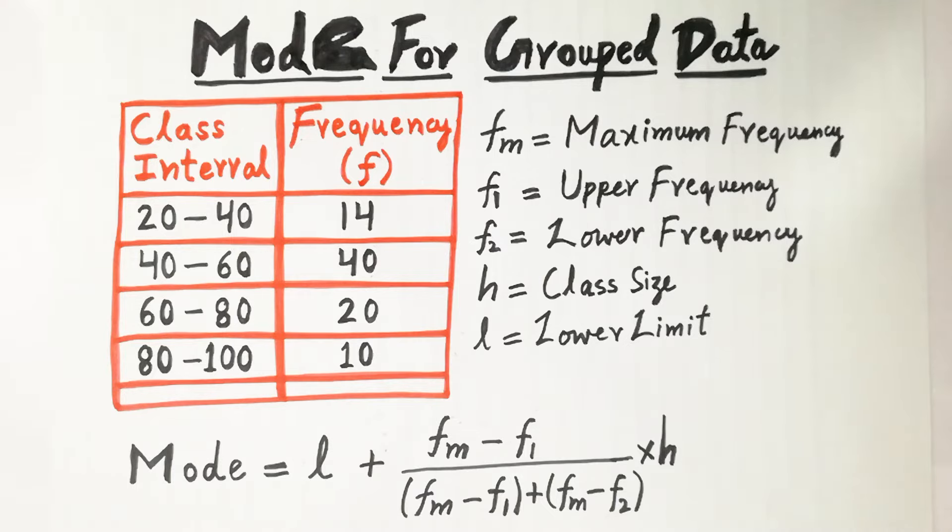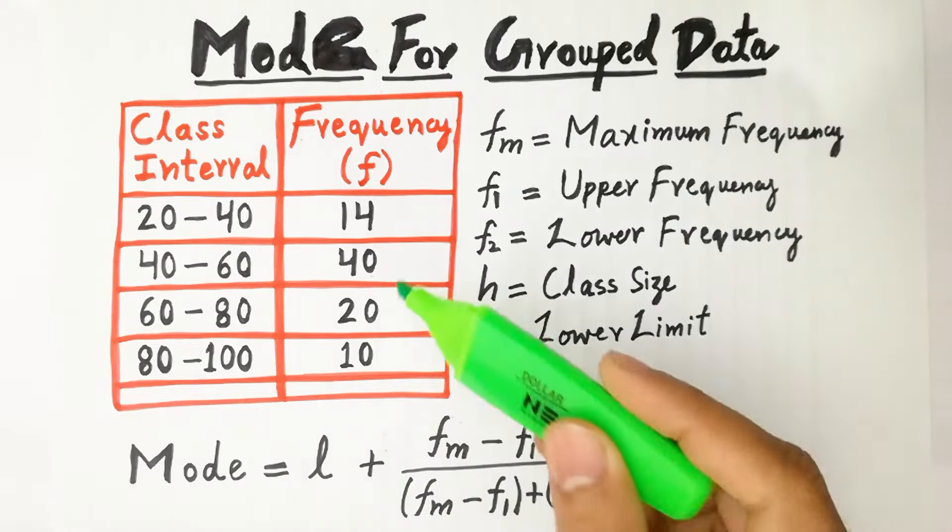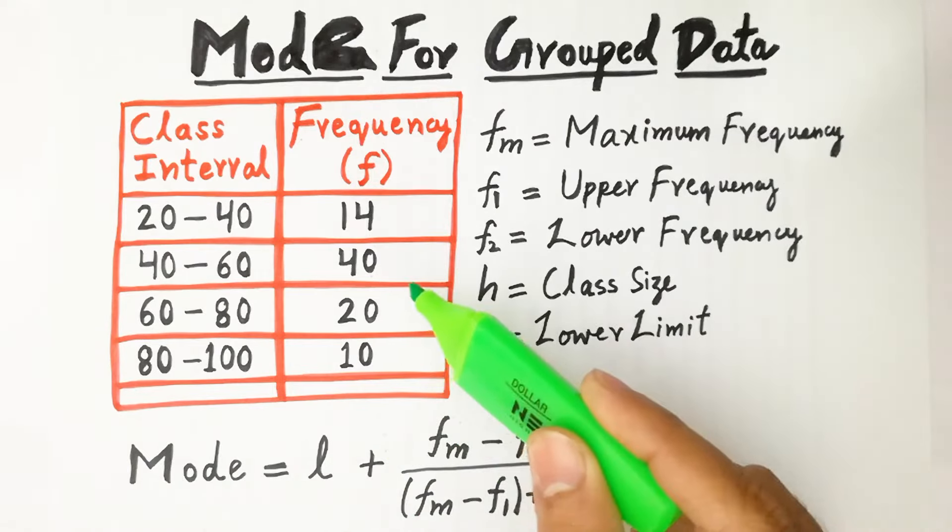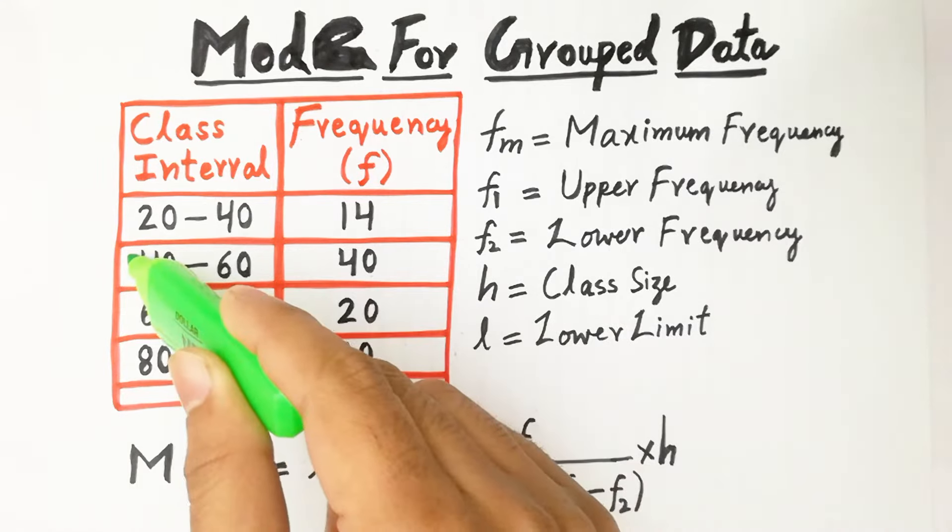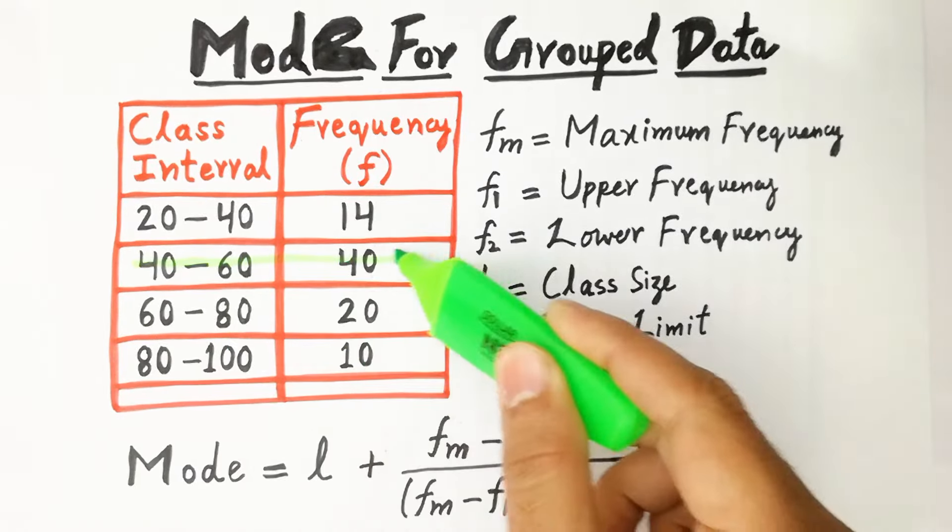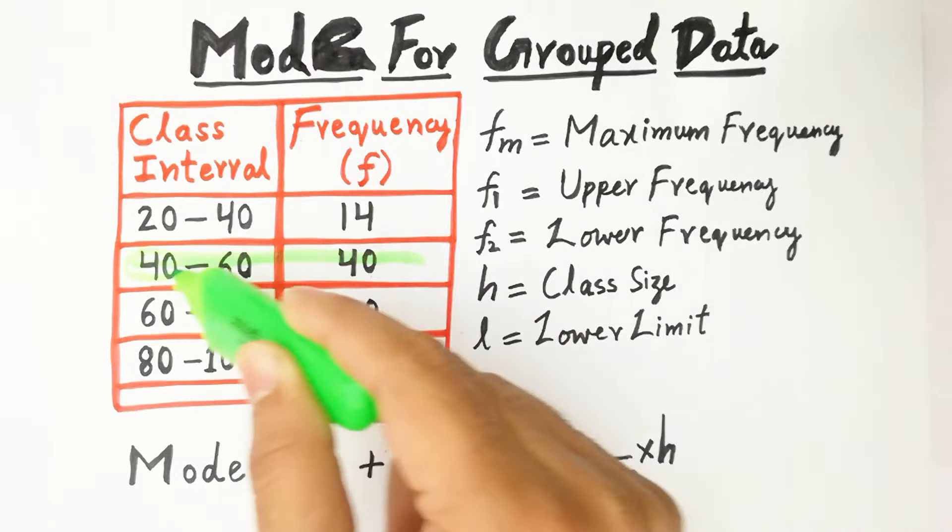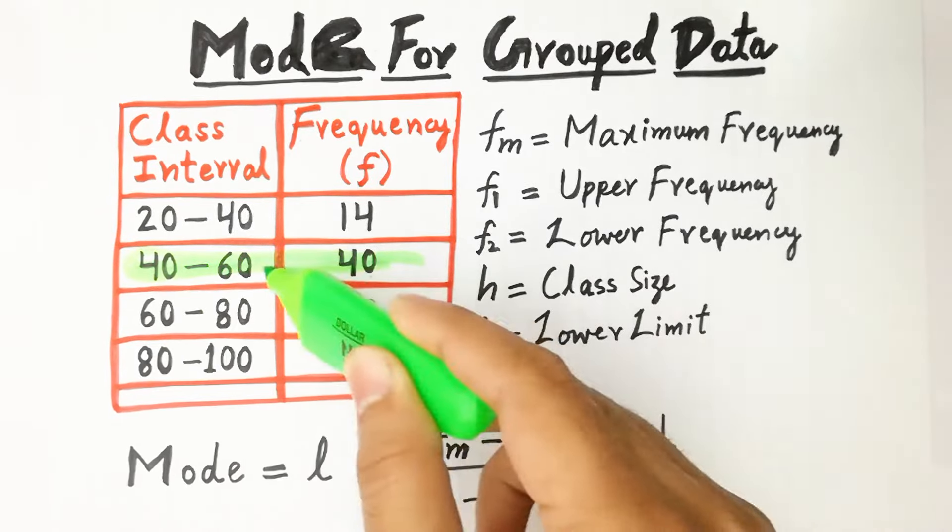In this given group, what value has a maximum frequency? The maximum frequency is here, 40 is the maximum frequency, so you can select this group to calculate the value of mode.